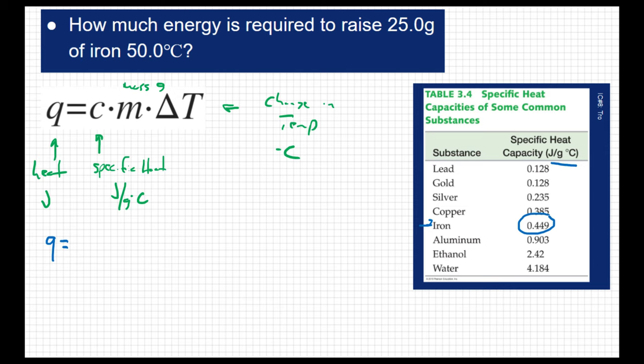So in this problem, we're going to use 0.449 joules per gram degree Celsius. And then the mass of this sample is 25 grams, and the change in temperature is 50 degrees Celsius.